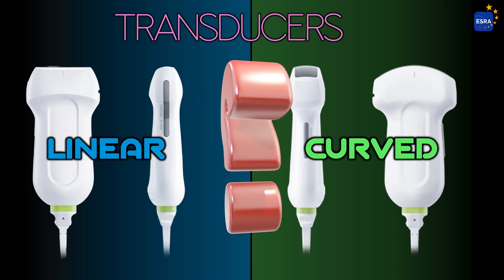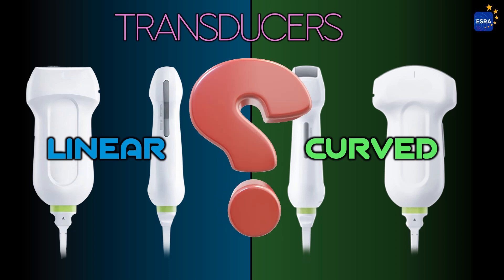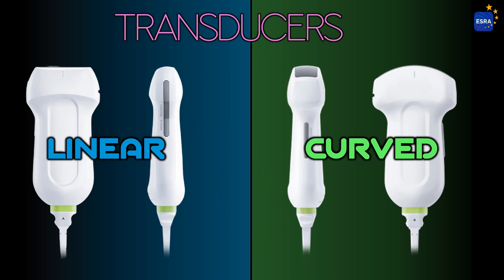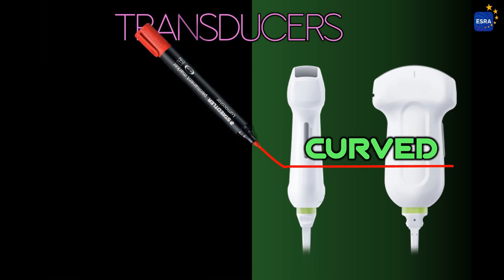Neuroaxial structures are situated at a depth that requires the use of low-frequency curvilinear transducers — 2 to 5 megahertz — for optimal ultrasound imaging of the spine. While these transducers provide excellent tissue penetration, their spatial resolution diminishes at greater depths.